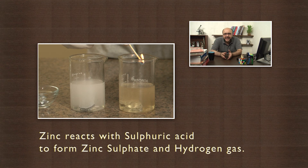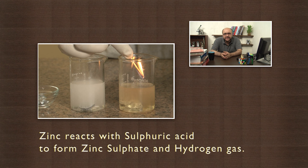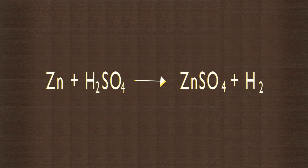In the second case, when zinc reacts with sulfuric acid, it gives zinc sulfate plus H₂: Zn + H₂SO₄ → ZnSO₄ + H₂. You can try this in the lab or at home with a metal like iron that is easily available. Take proper care while handling acids.